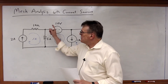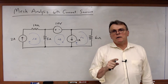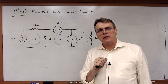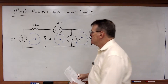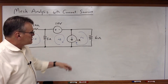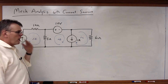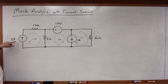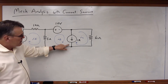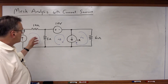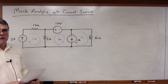Let's look at a situation where we've got a circuit that includes current sources and see how we will use mesh analysis to solve it. In this case I want to find the mesh currents Ia, Ib, and Ic, and I've arbitrarily defined them all clockwise. I've got a 2 amp current source on the edge of one mesh, a 1 amp current source that spans two meshes, and then resistors and a voltage source for the other elements.